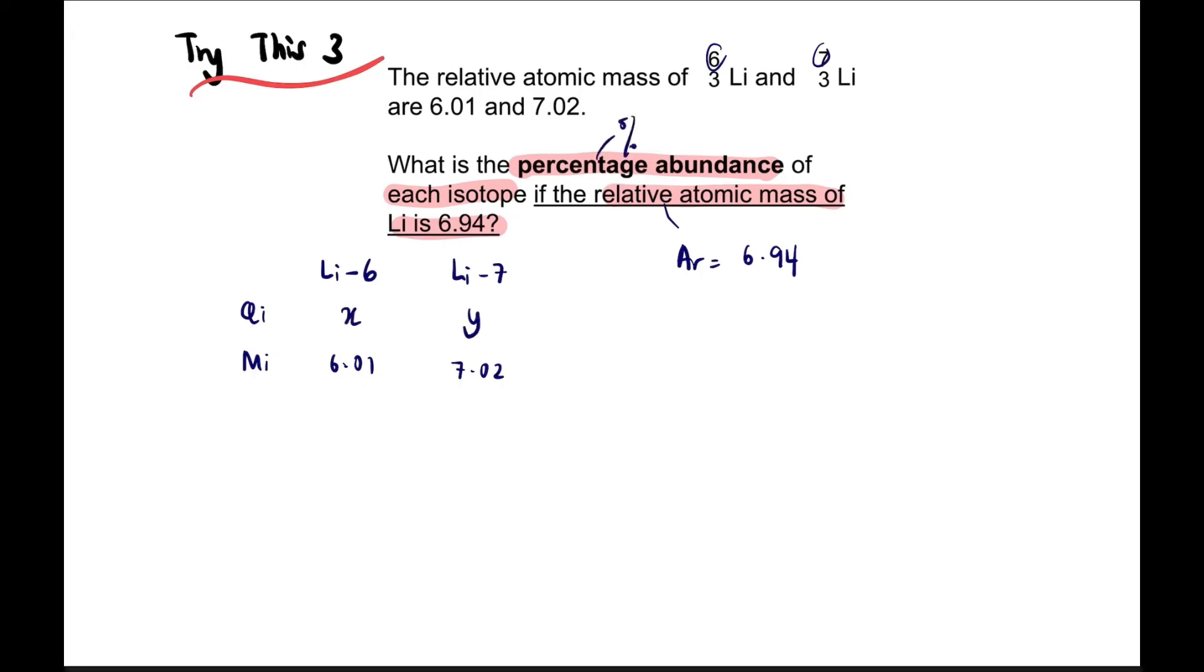To find percentage abundance, we assume Li-6 has abundance X and Li-7 has Y. Since it's percentage, X plus Y must equal 100%. In other words, Y equals 100 minus X. Now if the Ar is 6.94, that means average mass of lithium is 6.94 with unit AMU.